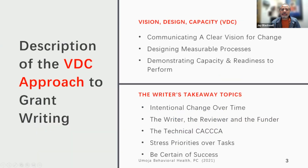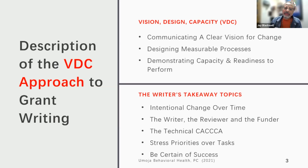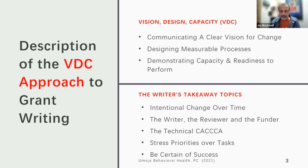This information is presented in a teaching form I've been working with for about 20 years called VDC. V stands for Vision, D is for Design, and C is for Capacity — the capacity of your agency to do the work. This approach to grant writing helps you as a writer to look at any application that comes across your desk and formulate your ideas to speak about resource development.